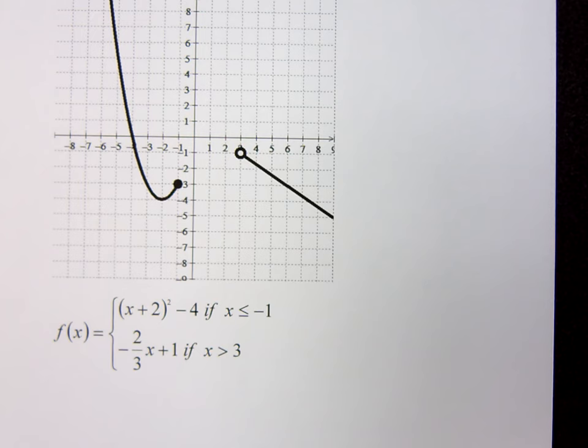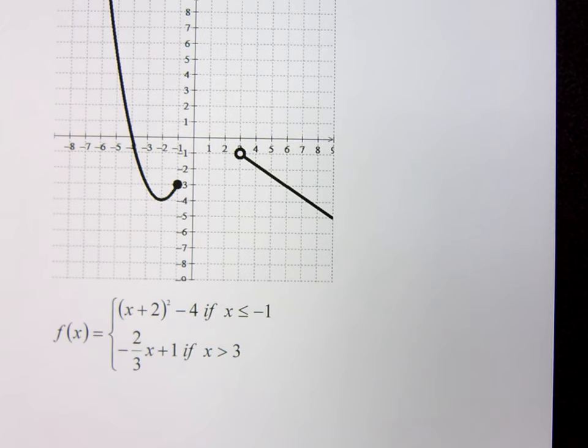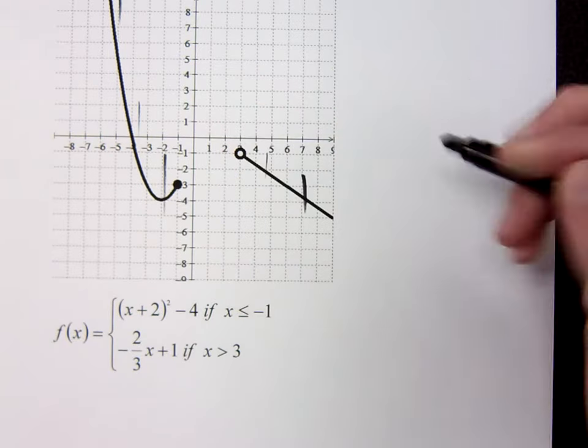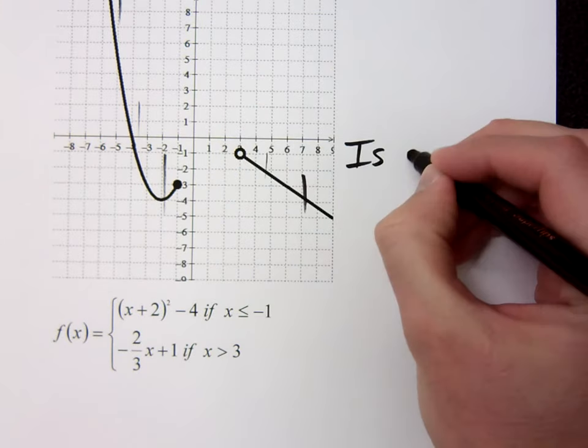Number one, I'm calling it a function, so it better be a function, which means it's going to pass the vertical line test. Does this pass the vertical line test? No matter where I draw my vertical lines, I'm going to be okay, right? So, this guy is a function.